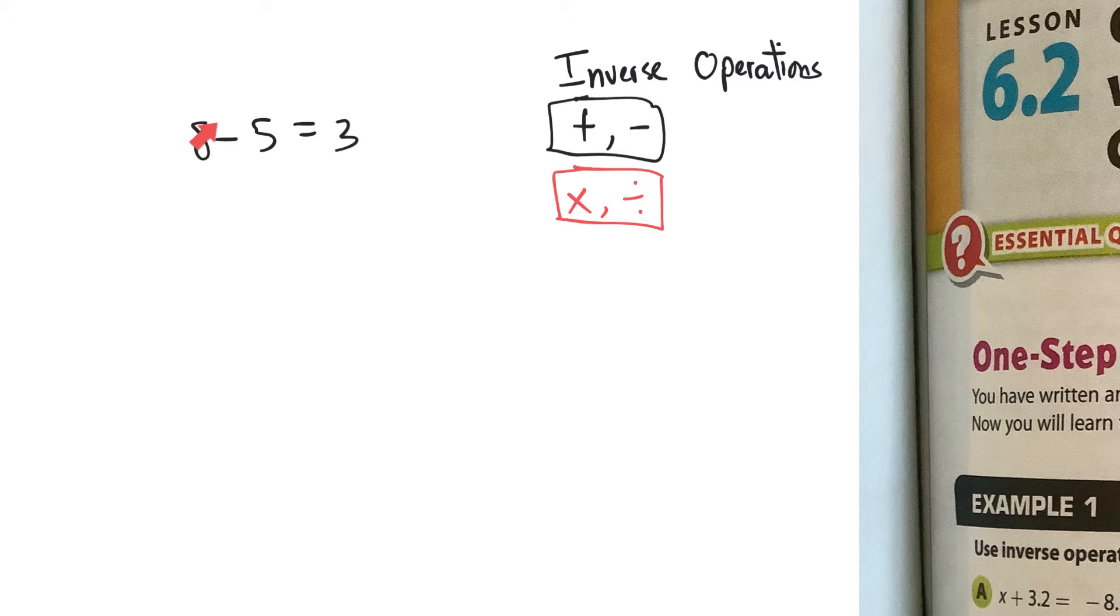So coming back to my example of 8 minus 5 equals 3, I could rewrite this using inverse operations. I could say 8 is equal to, and if I bring this over to the other side, I have to use the inverse operation. So if I bring it to the other side of the equal sign, I have to call it a plus 5. And watch what happens. 8 is equal to 3 plus 5, isn't it? Because we know that 3 plus 5 is 8.